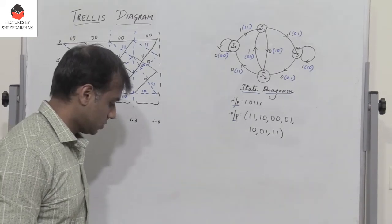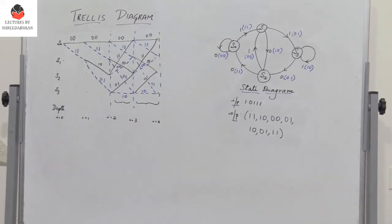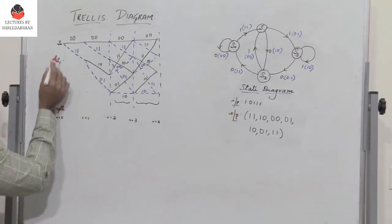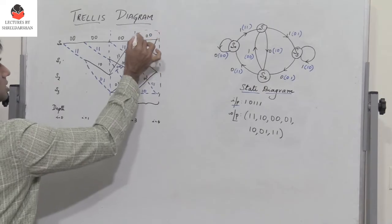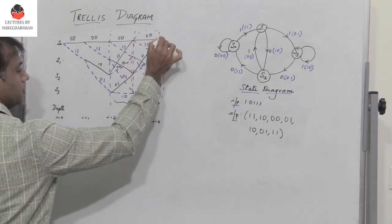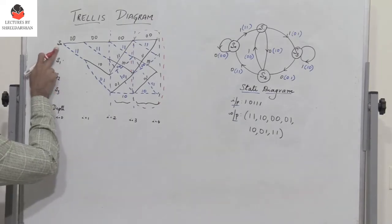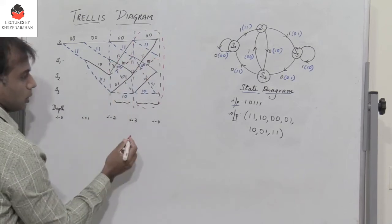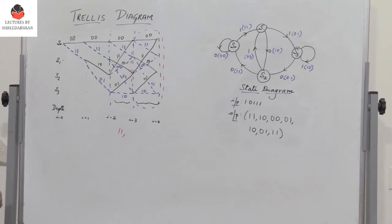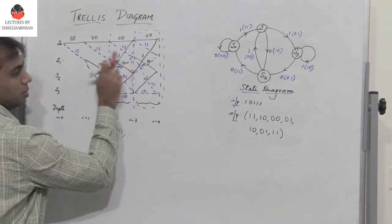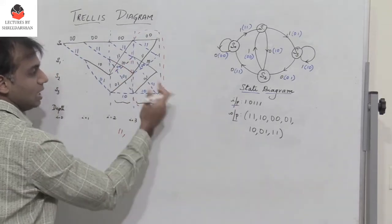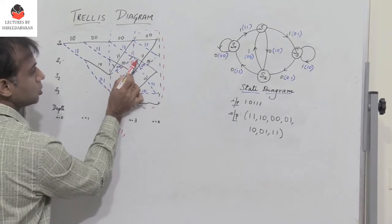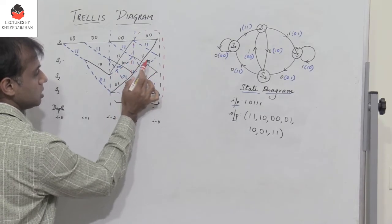Now how do I get the output? Initially, we assume we are in state s0. If I am in state s0 and the input is 1, I go to state s1 with output 1,1. So output is 1,1. Now I am in state s1. If I am in state s1 and the input is 0, I go to state s2 with output 1,0. So I have 1,0 here.